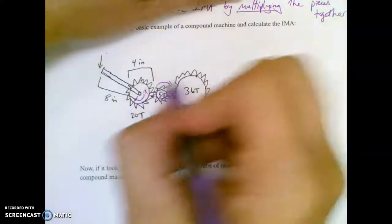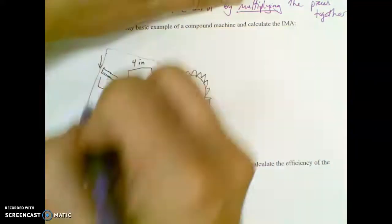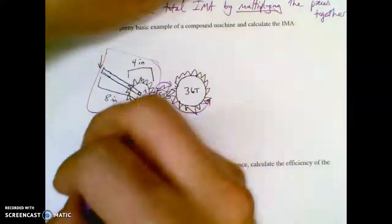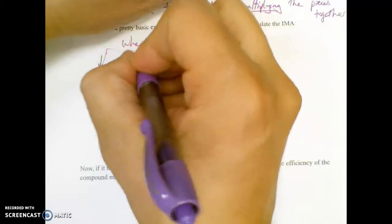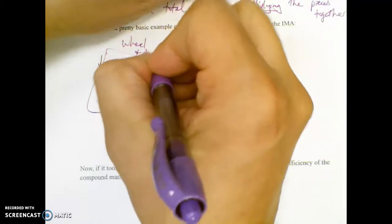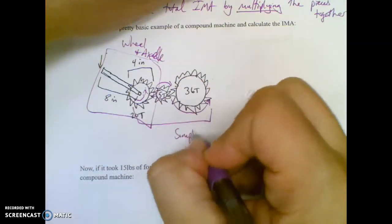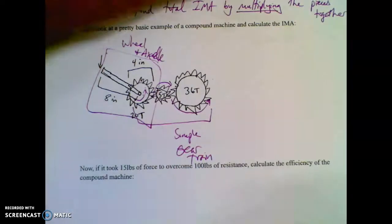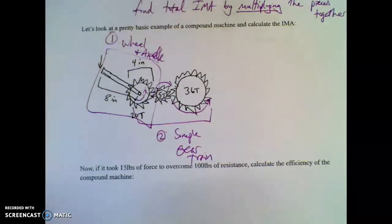Basically, when you look at that, you should see two different systems. Right here you have one system, and this is actually, whether it looks like it or not, a wheel and axle. And then you have a simple gear train. So I'll call this part one and this part two. You basically have two machines together.